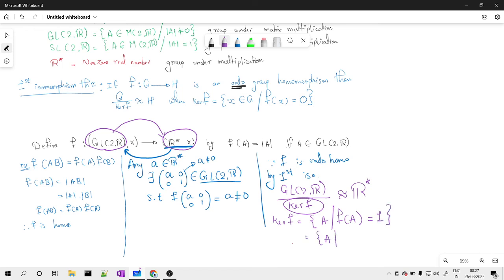So what I found is this is all matrices A such that f of A... what is f of A? We define it as f of A by mod of A. So it is mod of A equal to one. That means collection of all those matrices whose determinant is one. Hence what we found is this is nothing but special linear matrix of order 2 over R, that is the kernel of f.